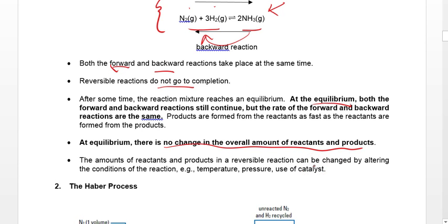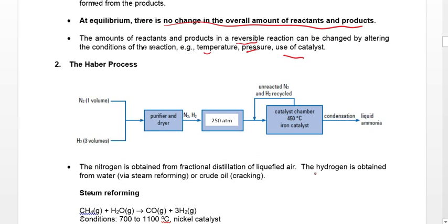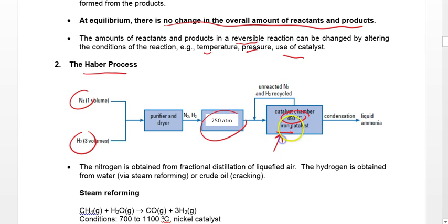One unique thing about a reversible reaction is that it can be affected by various conditions such as temperature, pressure, and catalyst. Now let's move on to the reaction used to make ammonia: the Haber process. Discovered by Fritz Haber during World War One, it is a simple reaction: N2 + H2, with high pressure, high temperature, and an iron catalyst, giving ammonia.